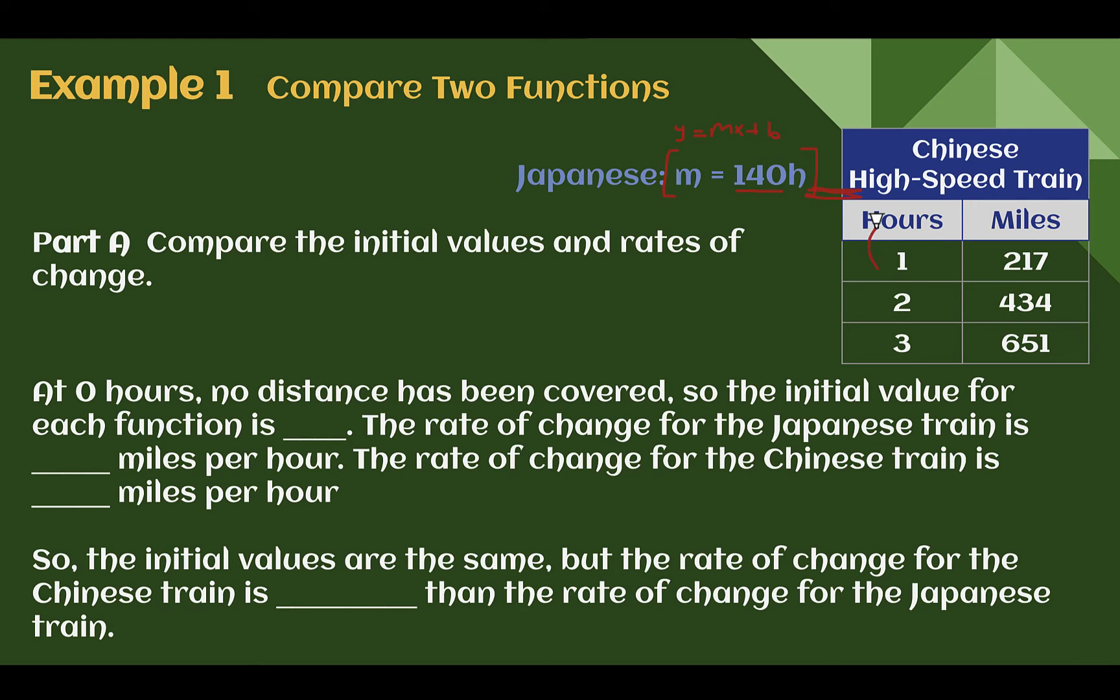If we check in the table, going back, what is it at 0? Well, each time, this is going up 217. So if we were to go back one hour, it would also be 217 less, so 0 would be with 0. No distance has been covered, that makes sense, the train hasn't started yet. So the initial value for each would be 0.